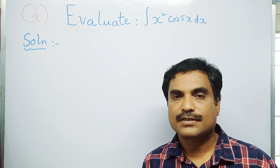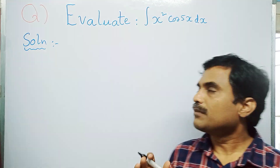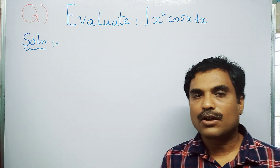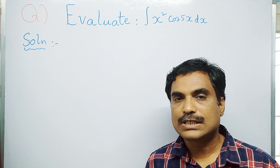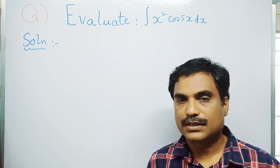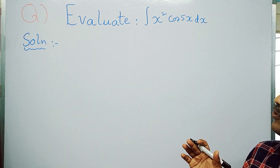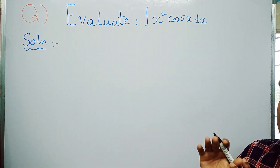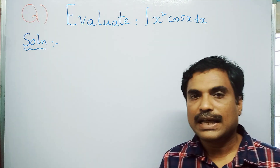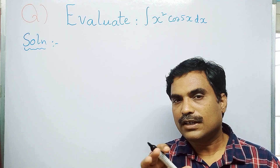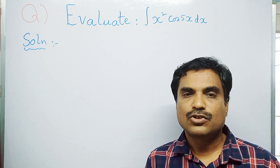That means you have to solve this problem using Bernoulli's integration by parts method. First, we use the term ILATE to choose the functions u and dv from x² cos 5x.